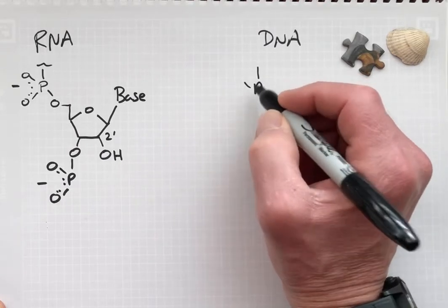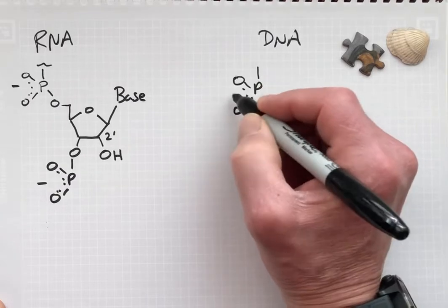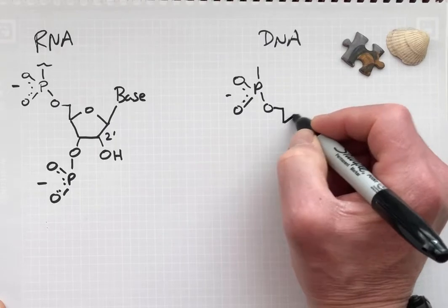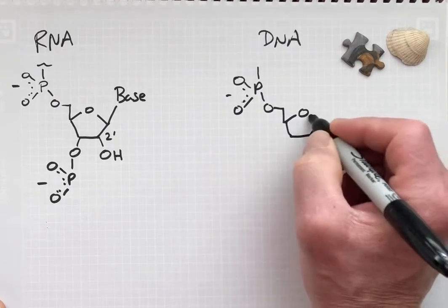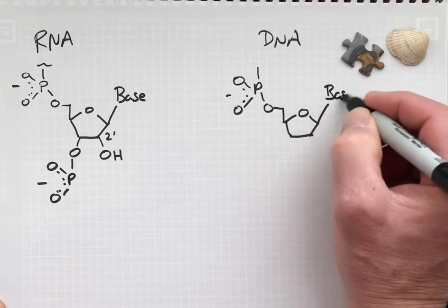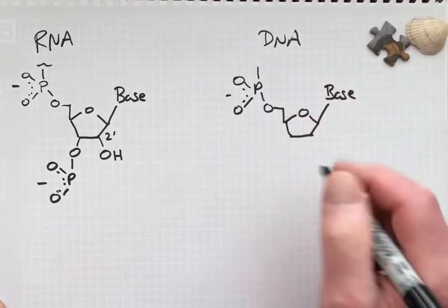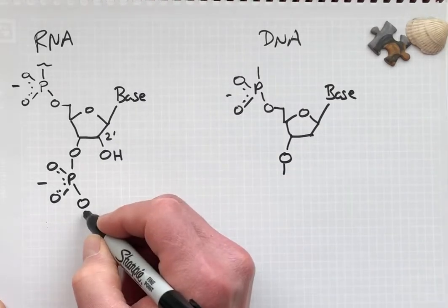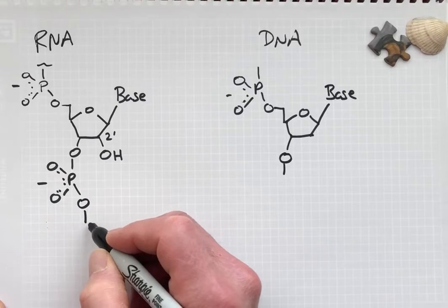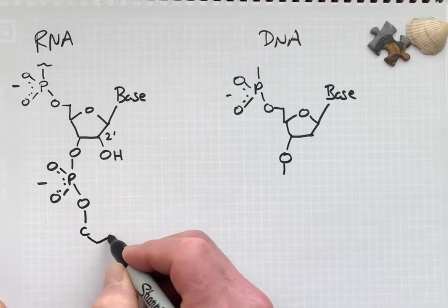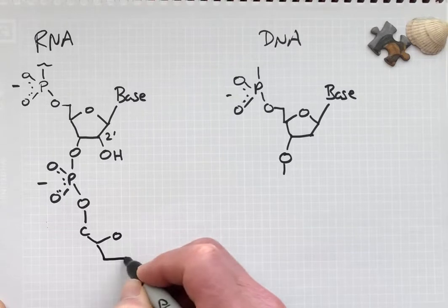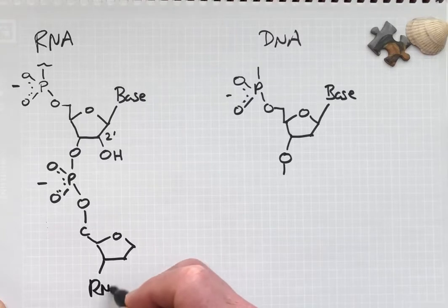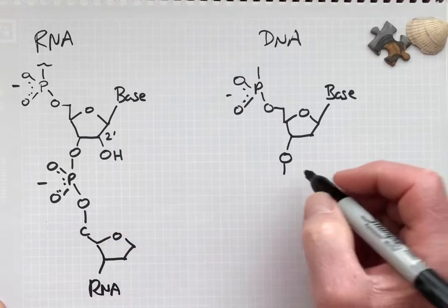Let's make the comparable drawing for DNA. The phosphodiester linkages are the same, still have a five-membered ring, a nitrogenous base. I'll continue these structures like so.